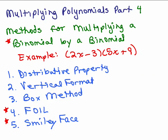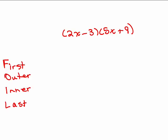Now we're going to do the same problem using what's called the FOIL method. We noticed in the other methods we had to multiply each term in one parenthesis with each term in the other parenthesis — so I had to multiply the 2x times the 5x, and I also had to multiply the 2x times the 9.